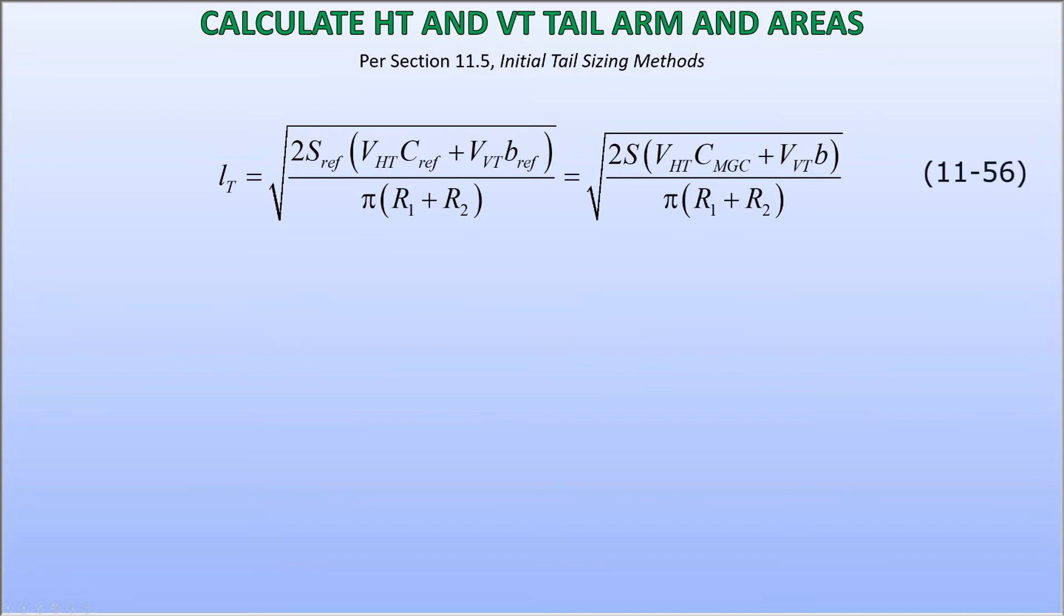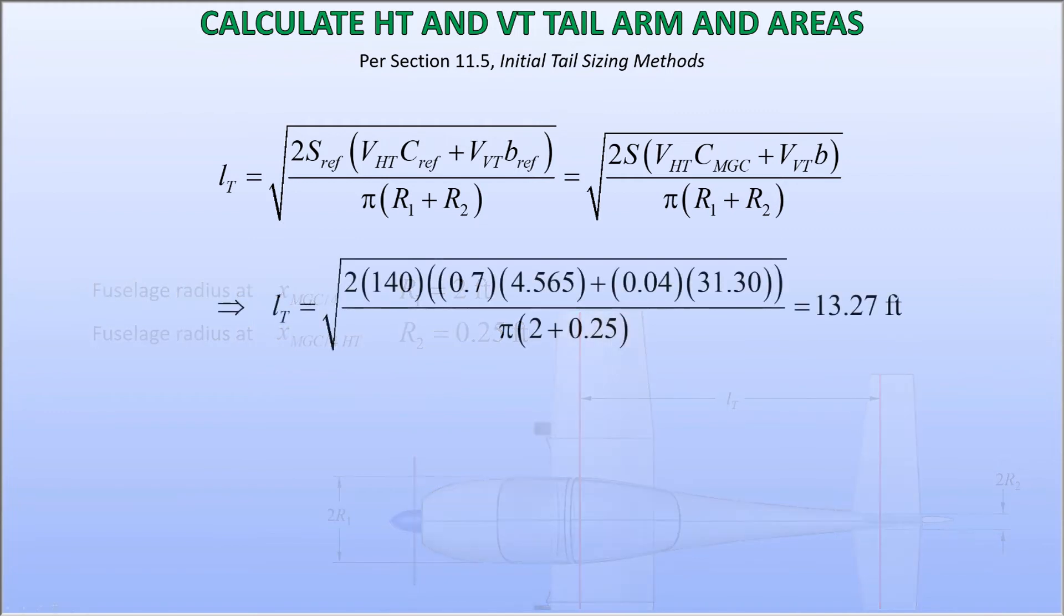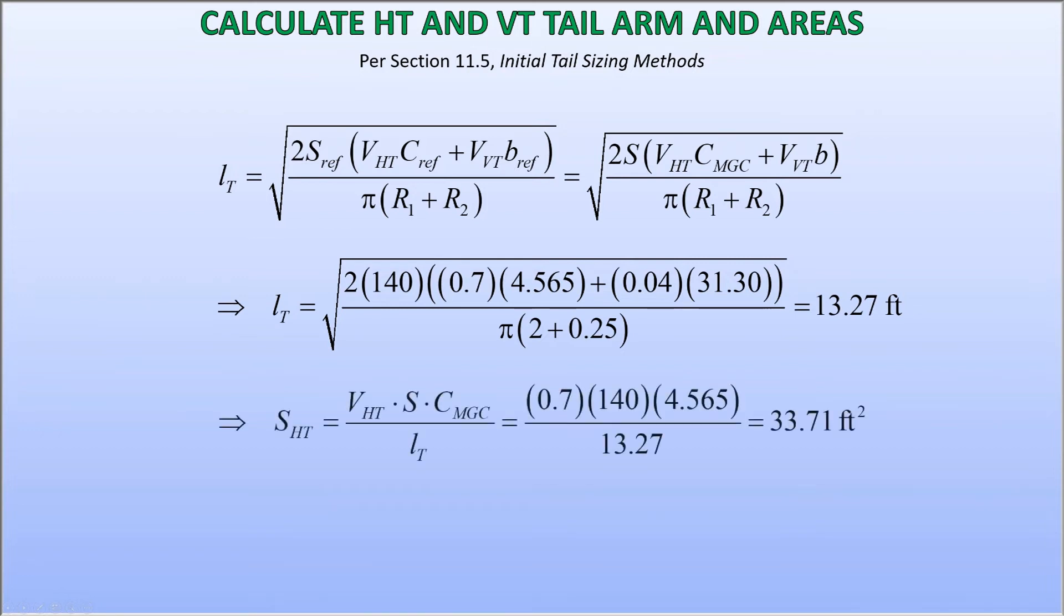Next apply equation 11-56 in the textbook to calculate the required tail arm. Method 3 assumes the position of the centroids of the areas representing the horizontal and vertical tails along the x-axis are close to one another. This gives a common tail arm of 13.27 feet. Now, since we know the desired horizontal and vertical tail volumes, we can determine the resulting tail areas using equations 11-57 and 58. Here we get 33.71 and 13.21 square feet, respectively.